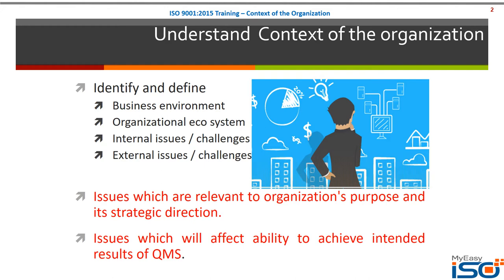When you ask these questions, you get answers to two very significant issues. You will get answers about what internal challenges you face and what external challenges you face. This is specifically what this clause requires — it wants an organization to identify all internal challenges and all external issues they have: issues that are relevant to your purpose and strategic direction, and issues that would affect your organizational ability to achieve the intended result of the quality management system.